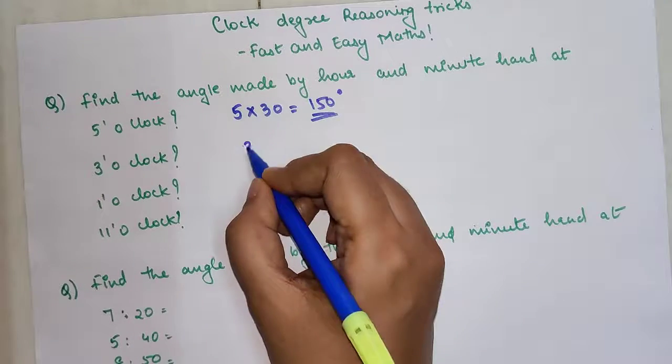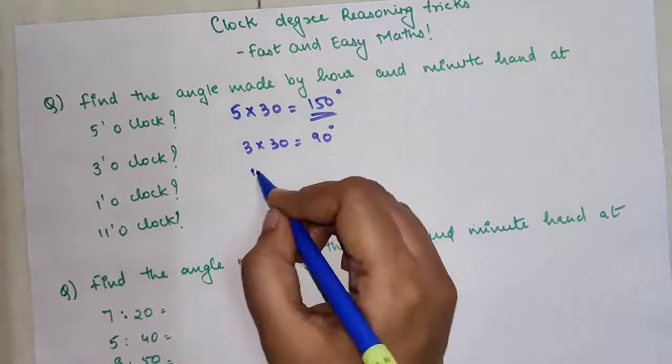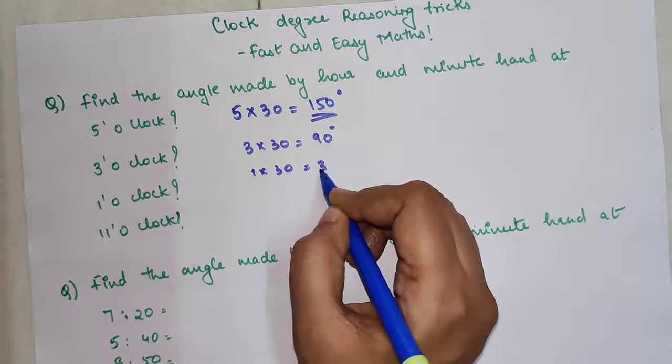Similarly, 3 into 30 will get you 90. 1 into 30 again is 30 degrees.